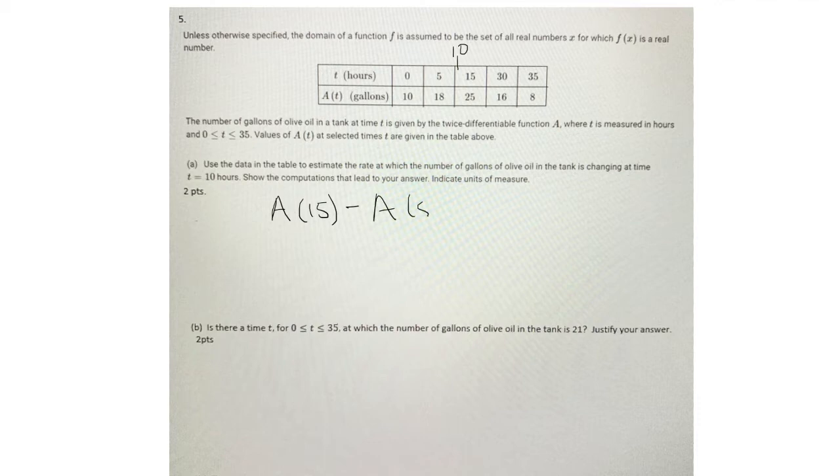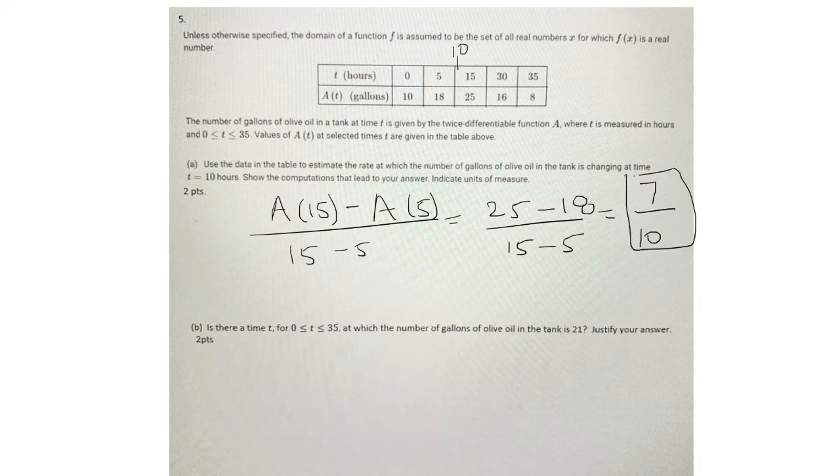So the slope is just the average rate of change in our case, which is 25 minus 18 over 15 minus 5. The rate at which the number of gallons of oil in the tank is changing at time t equals 10 is approximately 7 over 10. And then you just have gallons per hour because the numerator represents gallons and the denominator is hours.